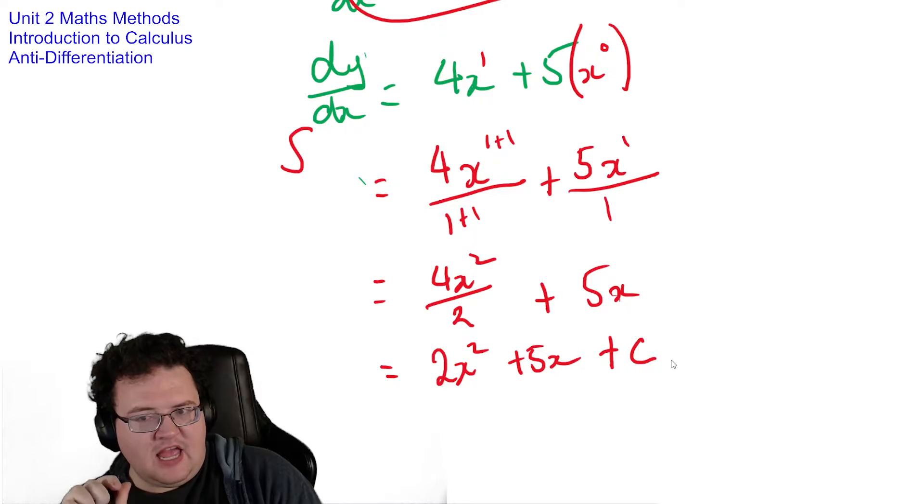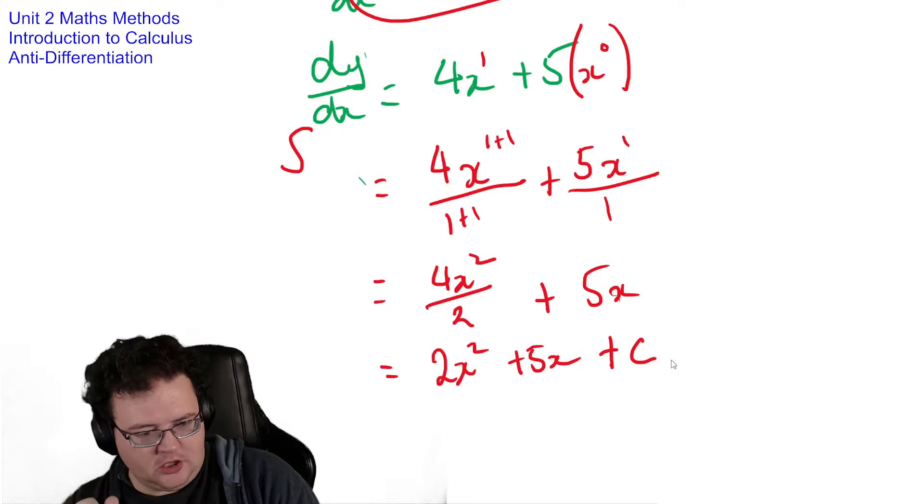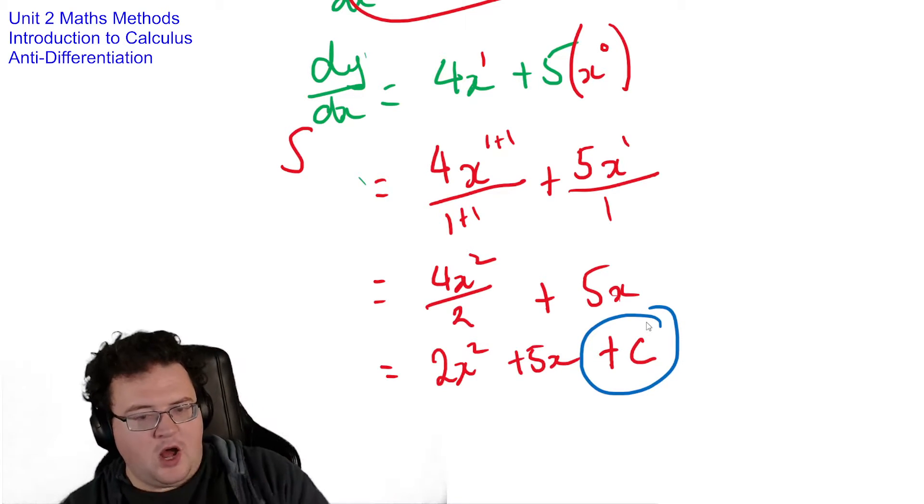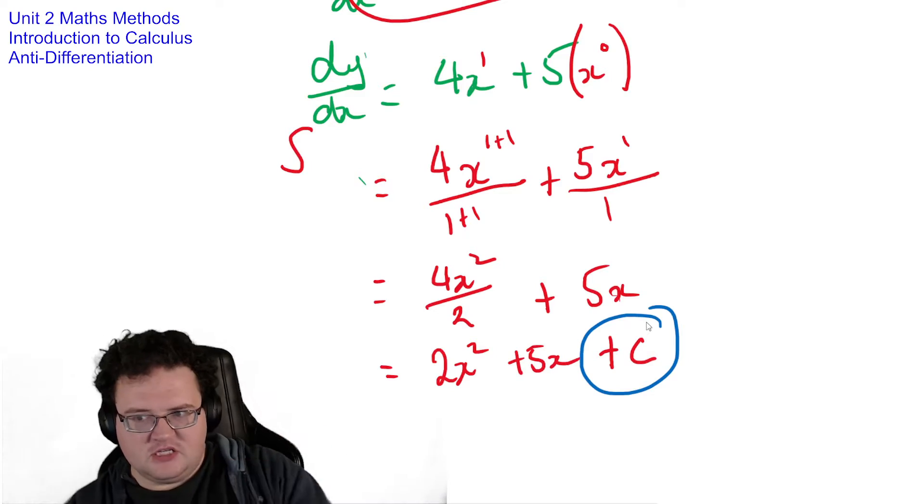Then if there is another piece of information, you can use that to find the constant that goes with it. Every possible anti-differentiated equation needs a plus c on the end because you don't know if it's plus 1 or plus 2 or plus 3 or plus 4.